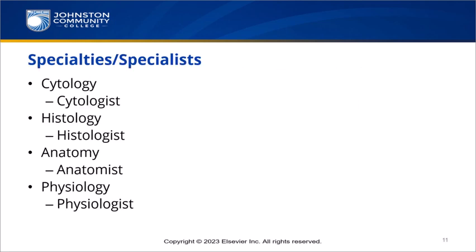Specialties and specialists. Cytology is the study of cells; a cytologist is the one who specializes in the study of cells. Histology is the study of tissues, while a histologist is the one who specializes in the study of tissues. The term anatomy has a literal meaning of to cut up or apart — we know this really means the study of the structure of the body. An anatomist is the one who specializes in the structure of the body. Physiology comes from the root physio, having to do with growth; however, physiology is the study of the functions of the body, with a physiologist being the specialist in the study of the function of the body.